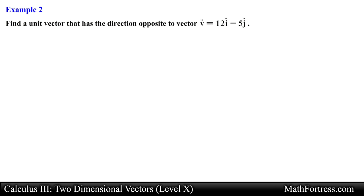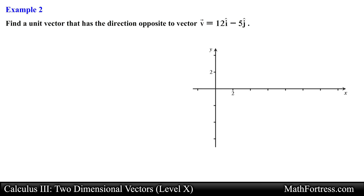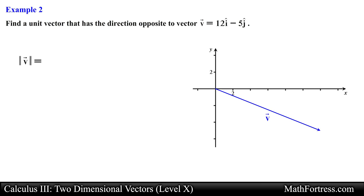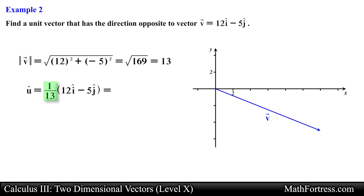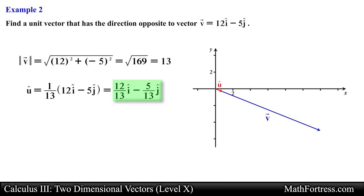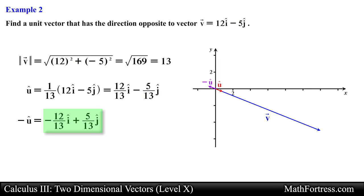Next example: find a unit vector that has the direction opposite to vector V. We first find the magnitude of vector V — using the Pythagorean theorem we obtain 13. Then we normalize vector V by dividing each component by 13, yielding the unit vector 12/13 I hat minus 5/13 J hat. To find a vector pointing in the opposite direction, we multiply each component by the scalar negative 1, obtaining negative 12/13 I hat plus 5/13 J hat.